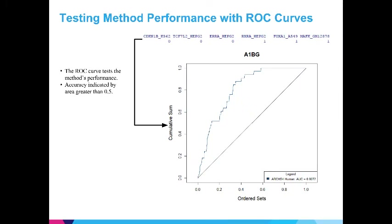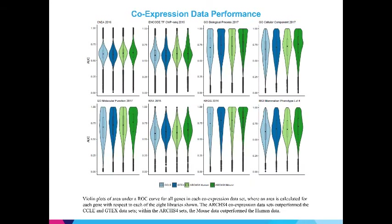We can measure the performance of this method with a ROC curve. Accuracy is indicated by area greater than 0.5. This is because some of the genes were already associated with some functions, so when these functions, along with newly predicted functions, are highly ranked at the beginning of the average correlations, they create an area greater than 0.5, indicating high performance. We performed this ROC curve area under the curve test for each gene. In these plots, you can see the result of performing the area under the curve performance test, with the average area under the curve being shown in the following violin plots.